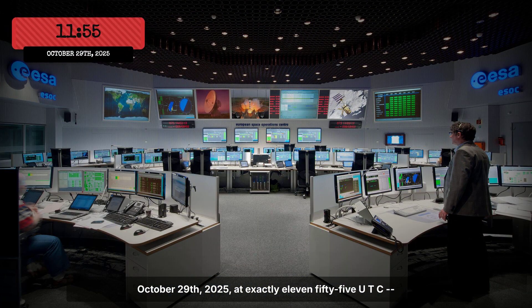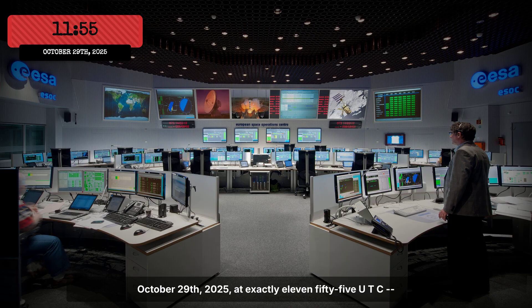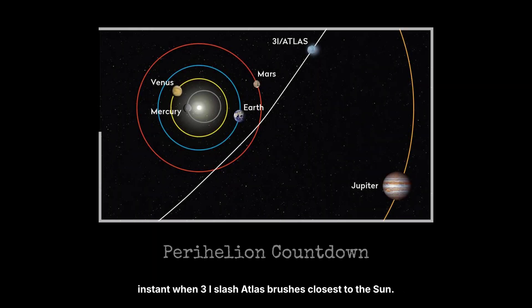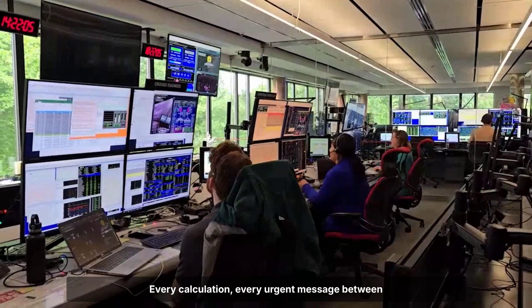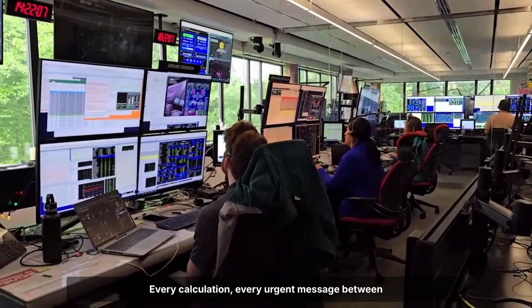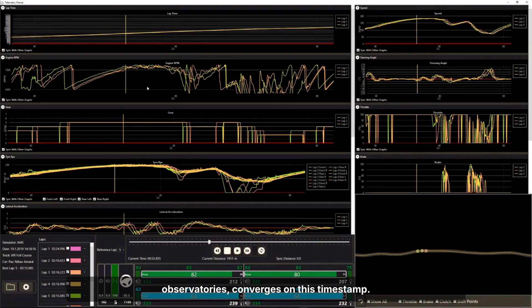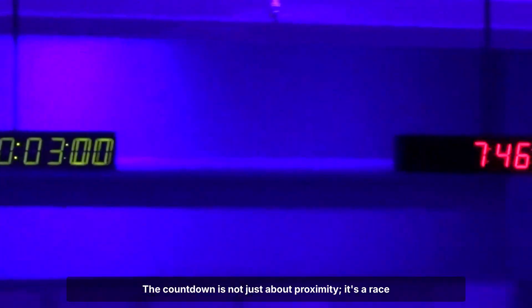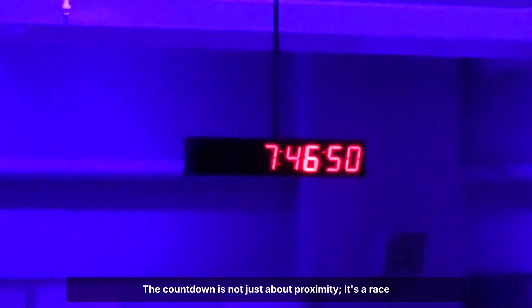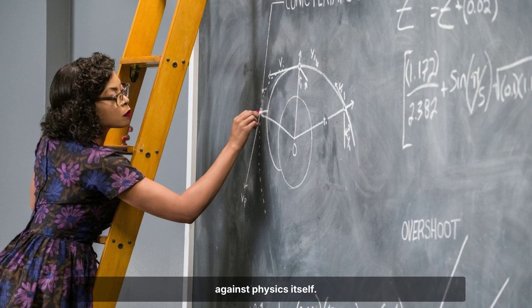October 29th, 2025, at exactly 11:55 UTC. This is the moment mission planners have circled in red, the instant when 3I-slash-Atlas brushes closest to the sun. Every calculation, every urgent message between observatories converges on this timestamp. The countdown is not just about proximity, it's a race against physics itself.